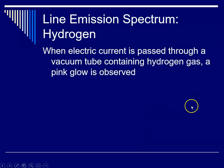So, the line emission spectrum is what results when electric current is passed through a vacuum tube that contains hydrogen gas, and a pink glow is observed when that happens.